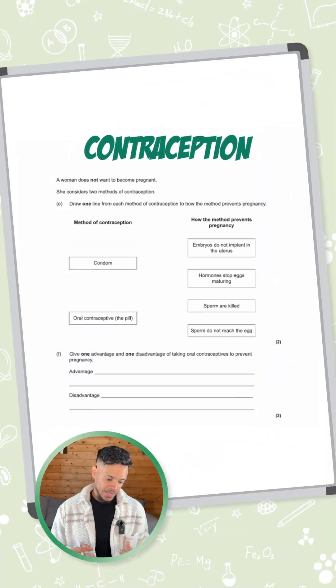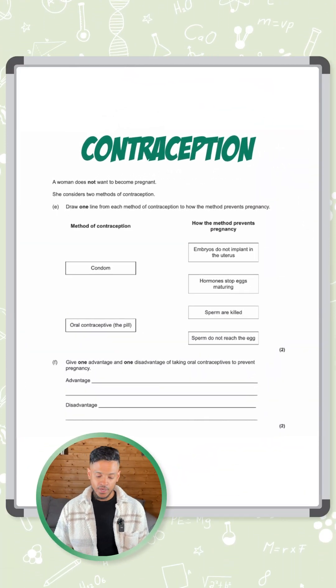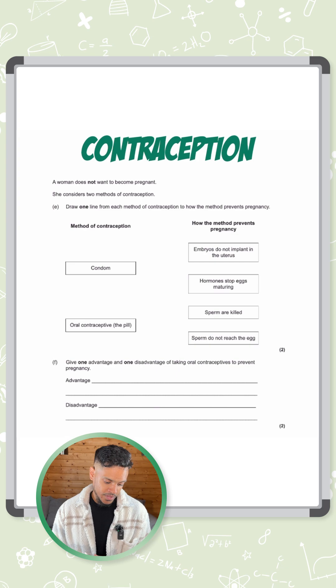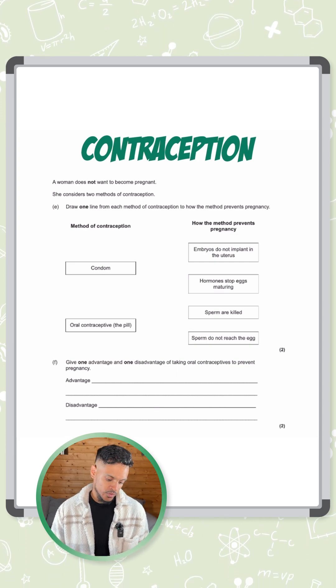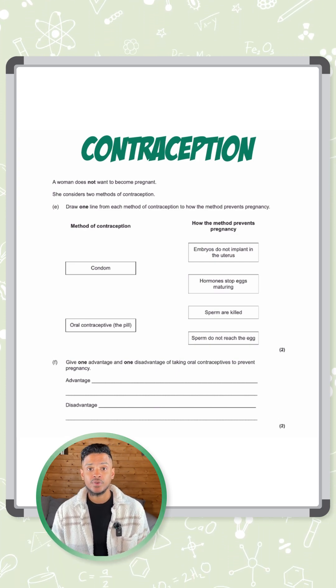Right, we have a question here on contraception. It says a woman does not want to become pregnant. She considers two methods of contraception and we need to draw the line for each method and how it prevents pregnancy.